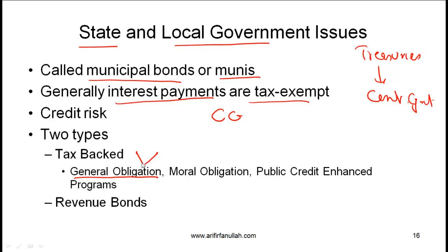There can be two scenarios: one is called unlimited tax GO, meaning the government authority has the ability to impose as many taxes as they want in order to meet the obligation. The other category is limited GO or limited tax GO, which means the ability of the government to impose taxes is limited. From an investor perspective, the bond with unlimited tax GO has less risk.